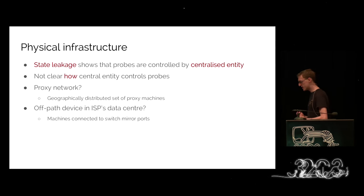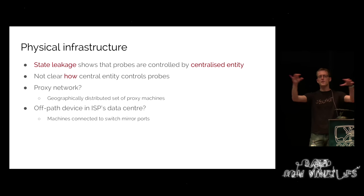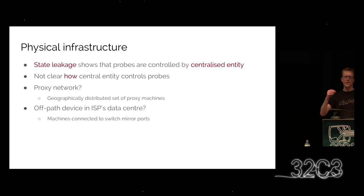One hypothesis is that it's a proxy network — a set of geographically distributed proxies all over the country, with the firewall tunneling its traffic over all these proxies to scan servers. Personally I think that might be too much engineering effort. A second hypothesis is that they have a server in a data center connected to a switch port, and whenever they want to borrow an IP address they update access control lists on the switch and inject packets to basically hijack the IP for a couple of minutes, then give it up again. But these are just theories — we still don't really know.